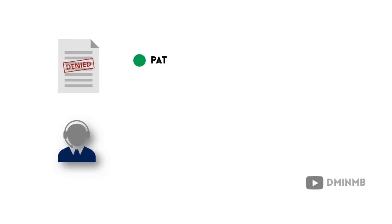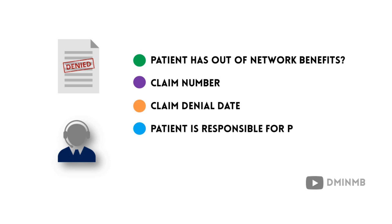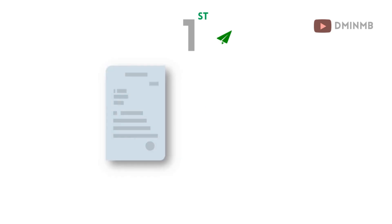When a claim is denied as provider is out of network, contact the insurance to know whether the patient has out of network benefits, the claim number, the denial date, and also verify whether the patient is responsible for payment or not.